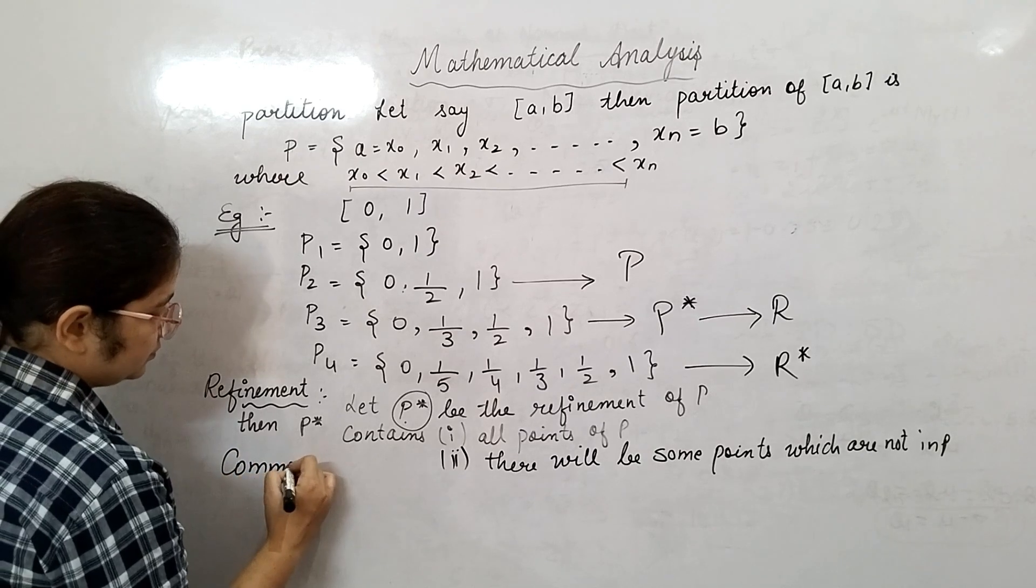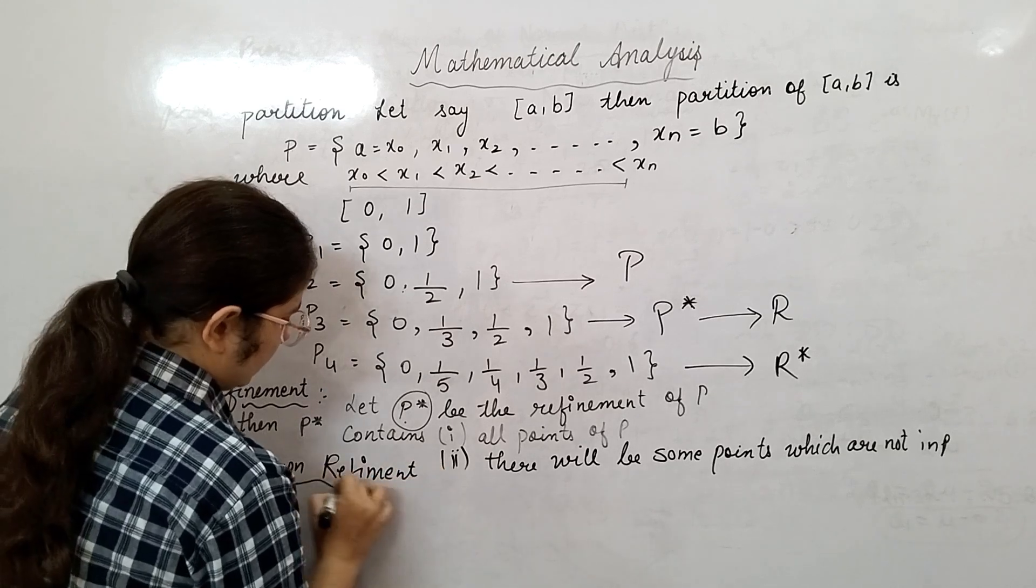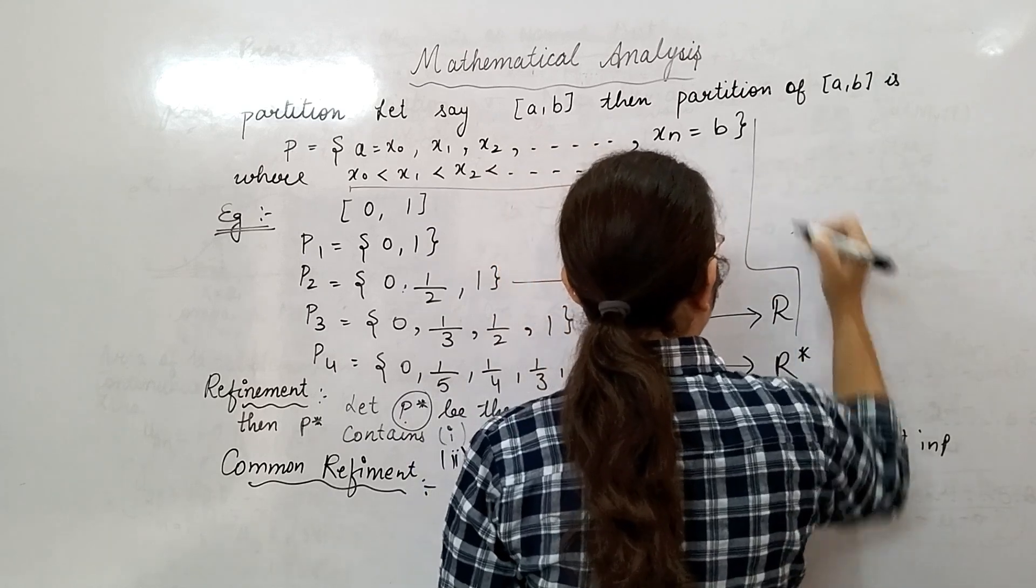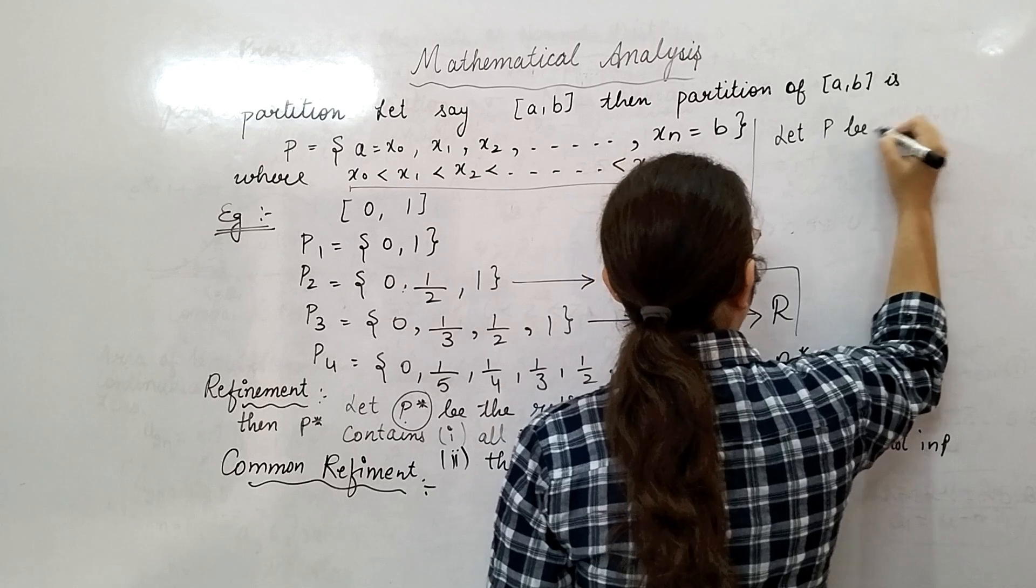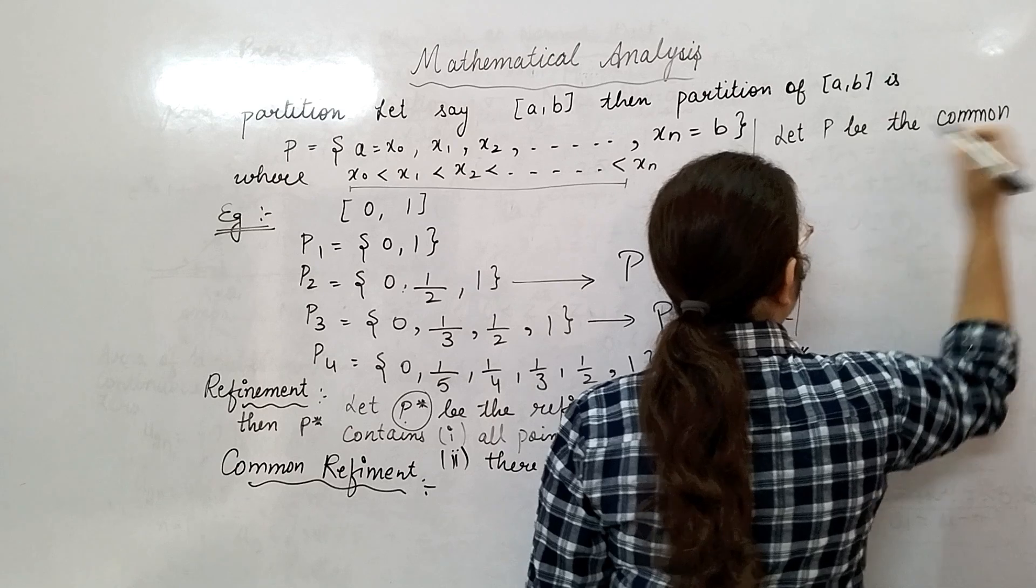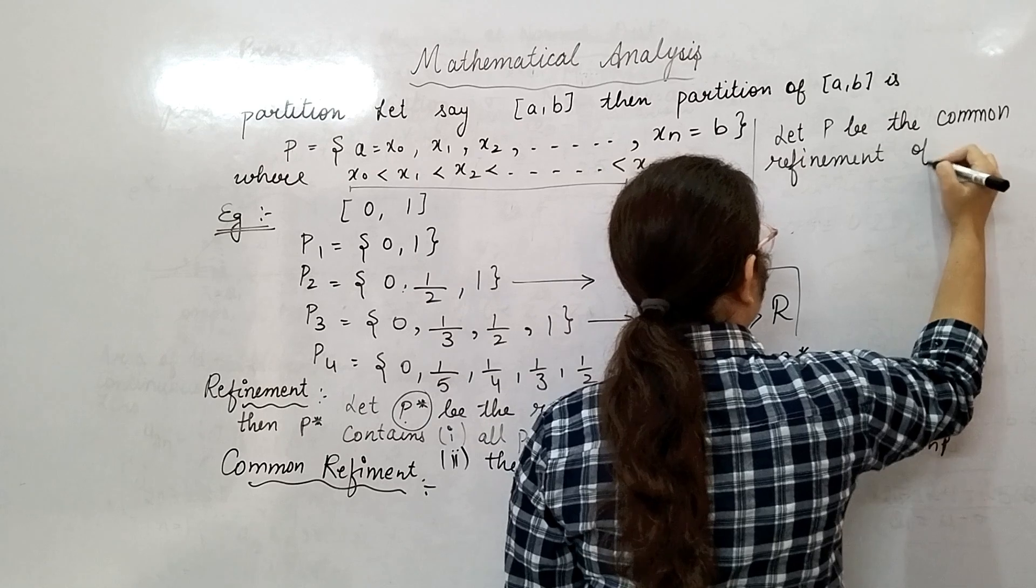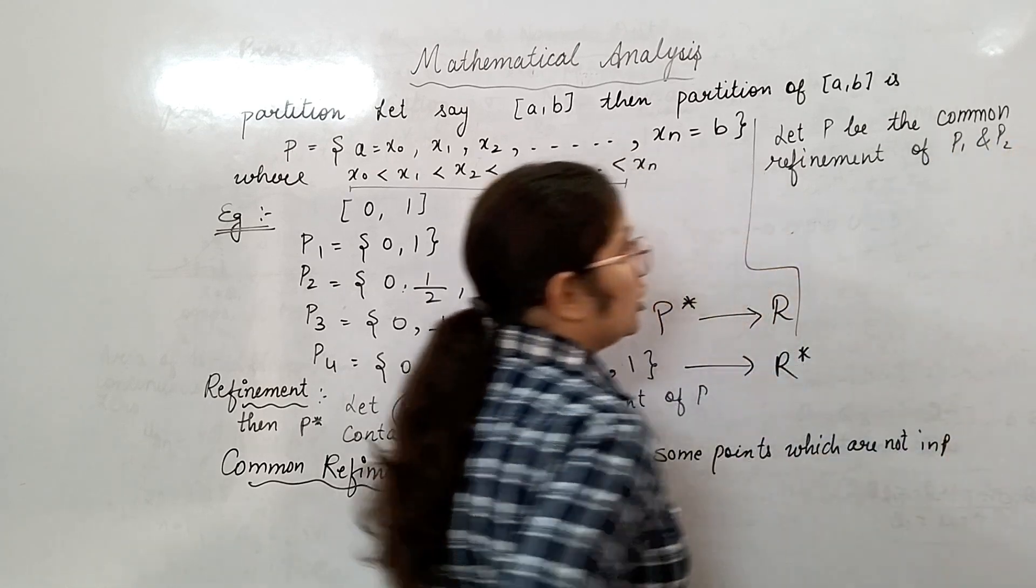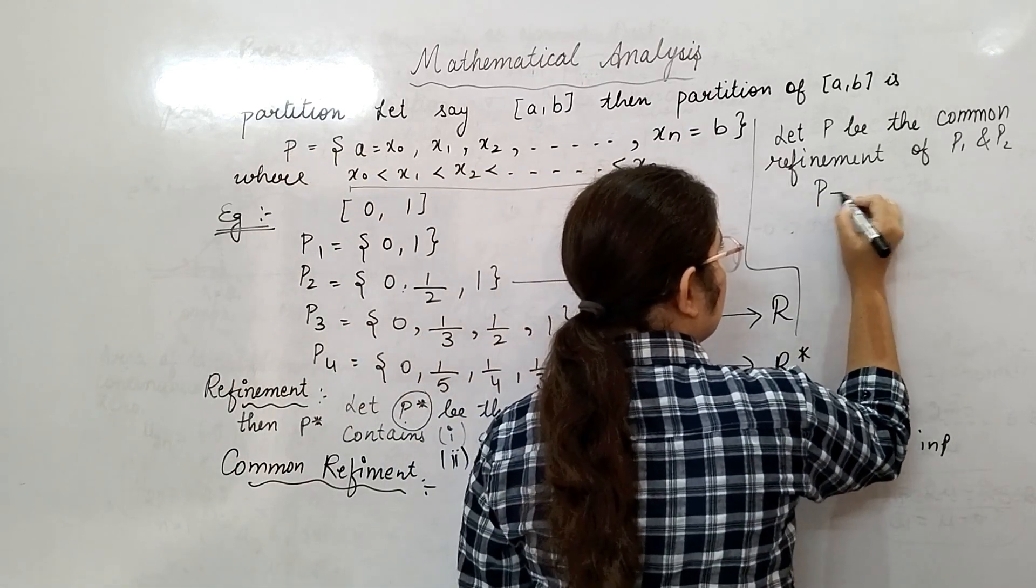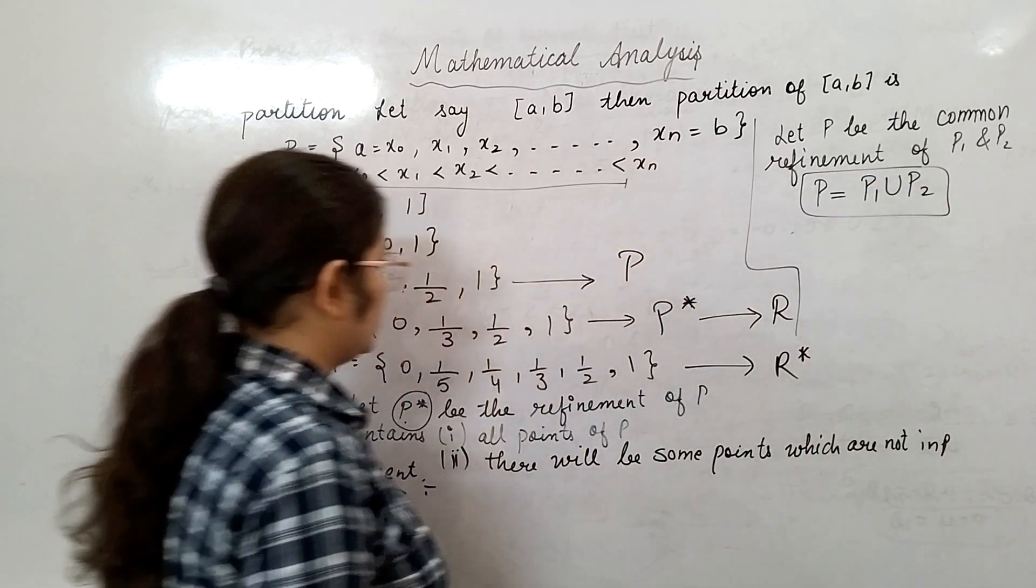Now let's talk about common refinement. Let P be the common refinement of P₁ and P₂. P, which is the common refinement of P₁ and P₂, means P = P₁ ∪ P₂.